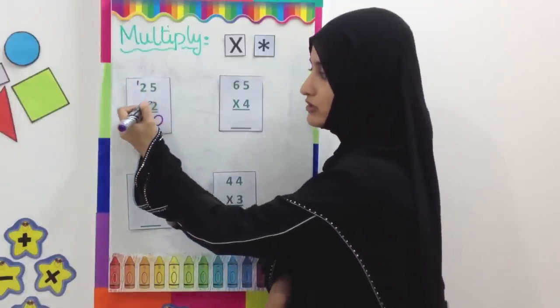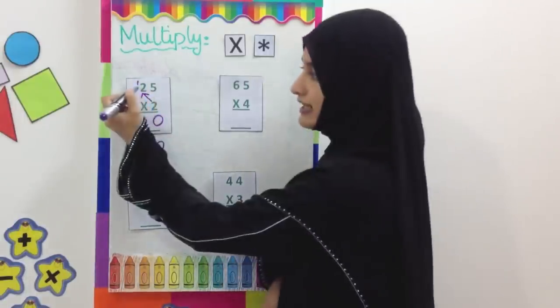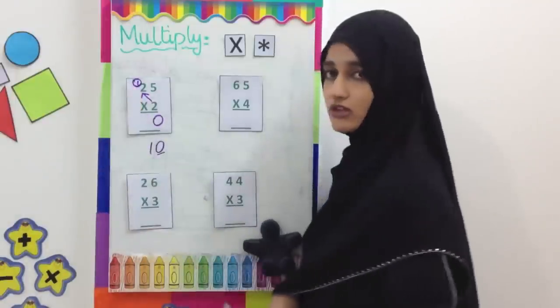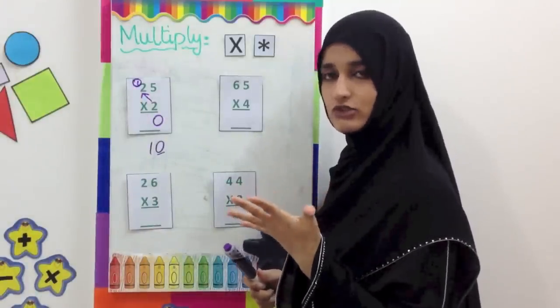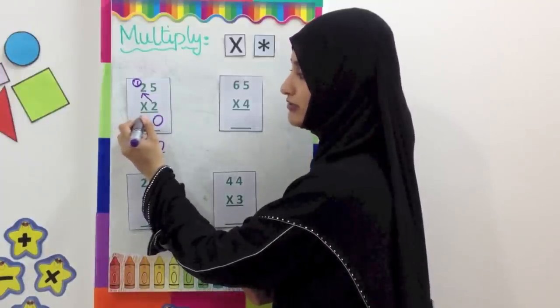Now we are going to multiply this 2 with this 2. 2 2's are 4. In the 4 we have another 1 here, another 10 over here. So in the 4, we are going to add one more 10. It's going to be 5. The answer is going to be 50.